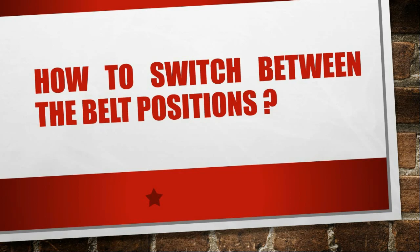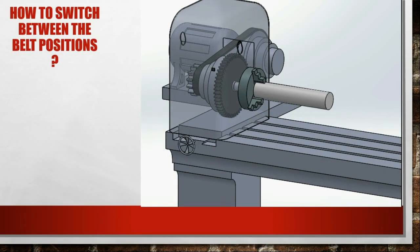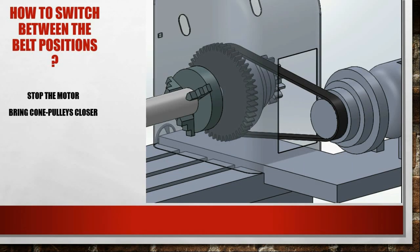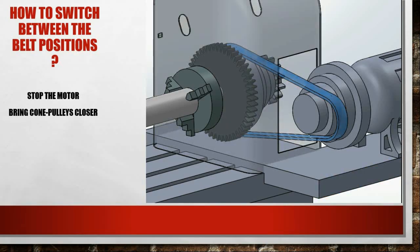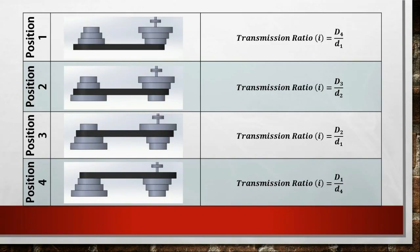Now how do you reposition the belt if you need a different RPM? Well, you stop the motor. There's a hand wheel to bring the cone pulleys closer so that the belt becomes loose and you can change the belt position.